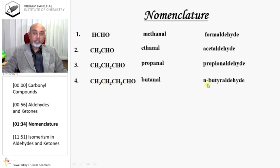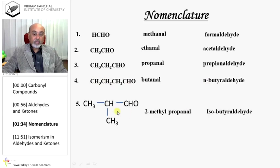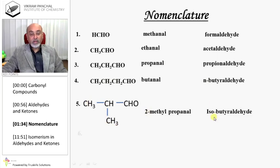CH3CH2CH2CHO is butanal, common name normal butyraldehyde. Here one methyl group is in a branch, so it is 2-methylpropanal, or isobutyraldehyde.